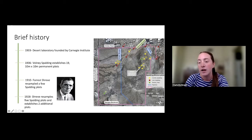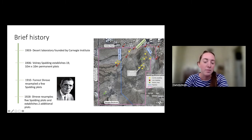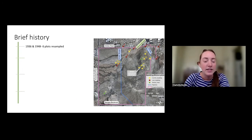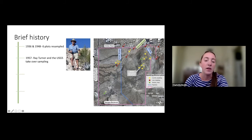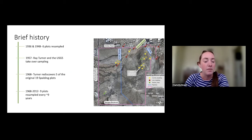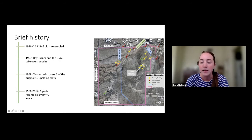Plot A isn't really monitored much anymore — it just counts annual plants. Plot B contains mapped perennial plants and is quite large, now 10 by 10 meter plots, though when Shreve set them up there were eight plots. In 1936 and 1948 the plots were resampled again, then in 1957 Ray Turner with the USGS took over sampling. In 1968 he rediscovered five of the plots that Shreve had originally sampled himself. Between 1968 and 2012, nine of these plots — all the yellow dots here in Plot B, and this green plot — are sampled approximately every nine years.